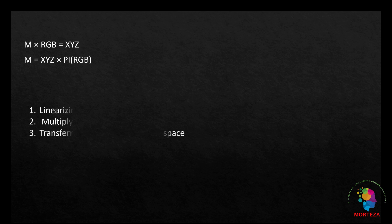Now you can easily convert the XYZ values to sRGB, which makes the color reproduction of objects more accurate. To make the pictures taken by the camera more realistically correct, you just go through three stages: linearize the image, multiply it by matrix M, and then transfer it into sRGB color space — three simple stages.